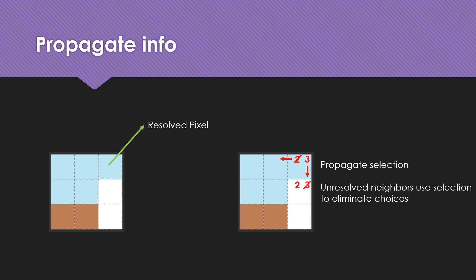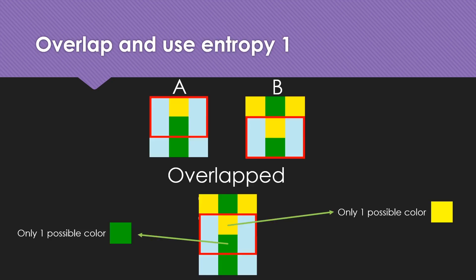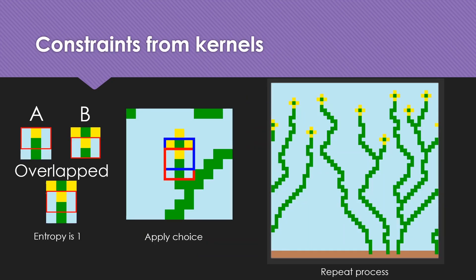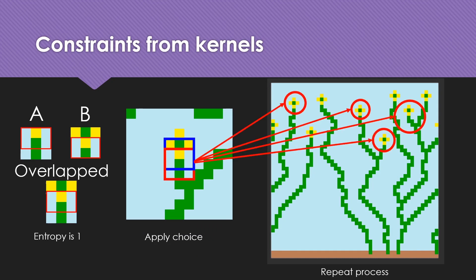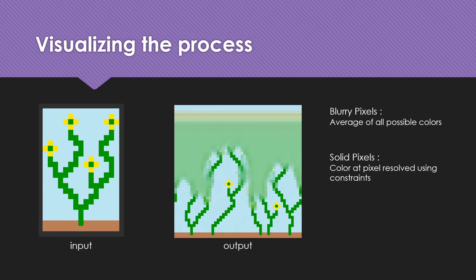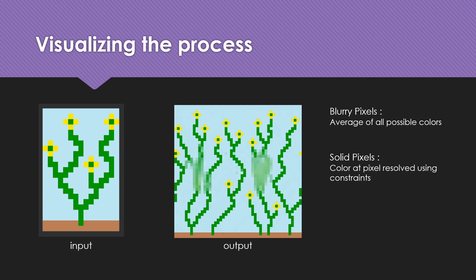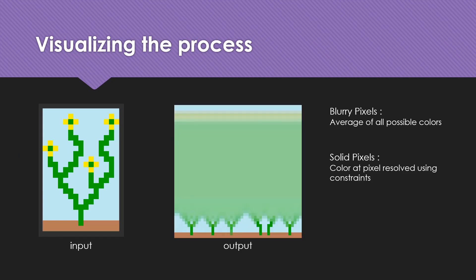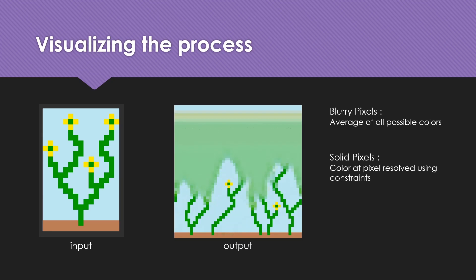This is essentially the same sudoku resolution process. By overlapping kernels and identifying only one possible color for each pixel location, we ensure that the entropy is 1, apply that choice, and repeat throughout the image. This allows us to create patterns such as flowers. By visualizing this process, the blurry images representing an average of all possible colors at each cell location slowly resolve into fixed colors, representing entropy being resolved to 1.